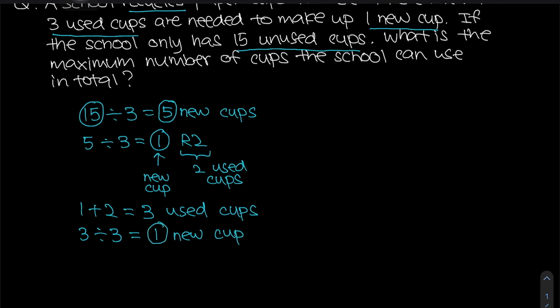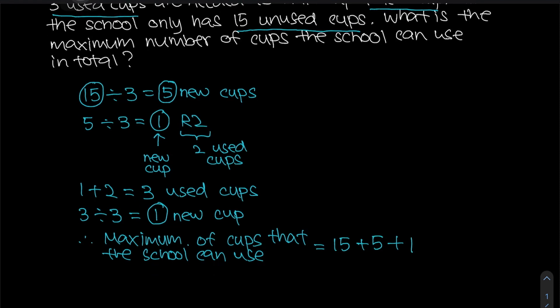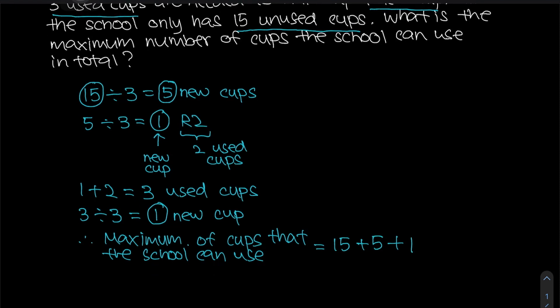Which means we have already circled all the new cups that we can get including what we originally started out with. Therefore, the maximum number of cups that the school can use is simply just adding up all the ones which I've circled previously. So once again, we have the 15 unused cups from the beginning, we have the five new cups which we exchanged the 15 for, we have one more new cup which we exchange the five used cups for which gives us a remainder of two used cups, and adding that one new cup that changed to used cup we get a total of three used cups which will give us another one more new cup. And in this case, once we add them up, we will get an answer of 22 which is your answer.